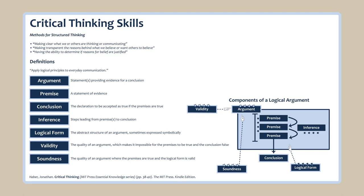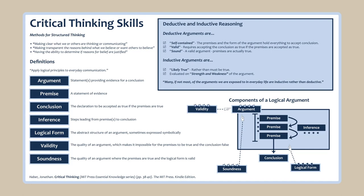While still on the subject of baseline terms and definitions, let's consider reasoning. Experts suggest two types of arguments used when reasoning: deductive arguments and inductive arguments. Deductive arguments are self-contained in that the argument holds everything one needs to accept the conclusion — they are valid and sound, meaning one must accept the conclusion if the premises are true and of valid form. Inductive arguments are likely to be true and tested based on the strengths and weaknesses of the argument. Jonathan Haber suggests many, if not most, of the arguments we encounter in everyday life are inductive rather than deductive. Holding an understanding of these key terms will help us better decipher arguments and diagrams. Consider adding these terms — like empathy and stakeholder — to your lexicon and framework.